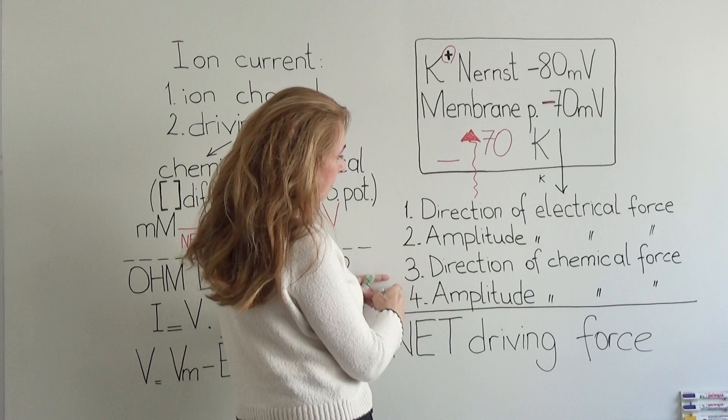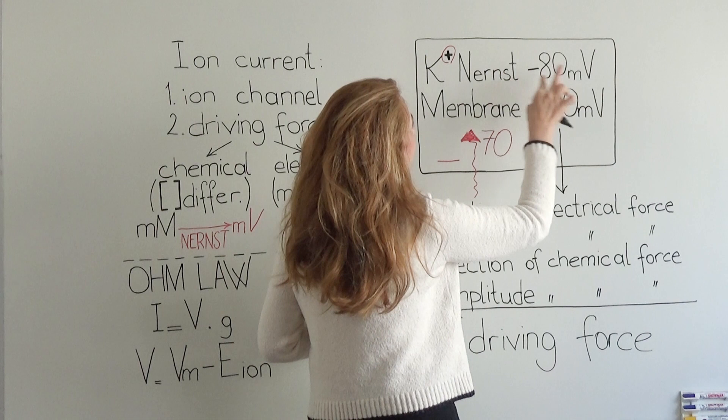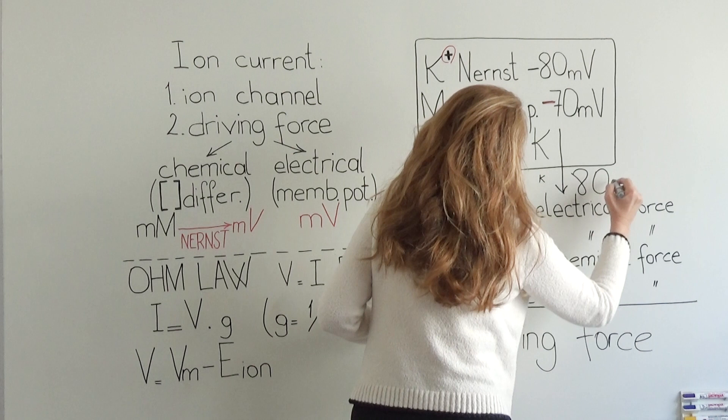Step four is: what will be the amplitude of it? The amplitude of it is 80 millivolts, which is the Nernst potential.